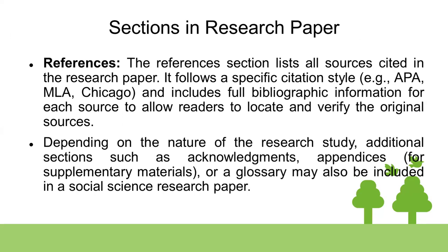The References section lists all sources cited in the research paper. It follows a specific citation style — for example, APA, MLA, Chicago — and includes full bibliographical information for each source. It allows readers to locate and verify the original sources. In social science generally APA is common, while some use MLA, Chicago, or Turabian style, so you should add references according to the appropriate style so readers can identify where information was sourced.